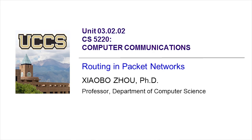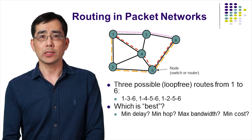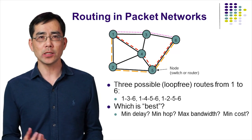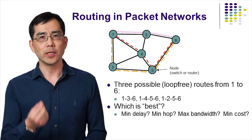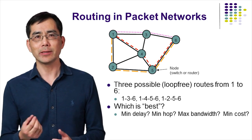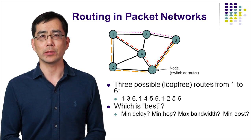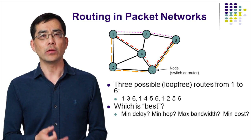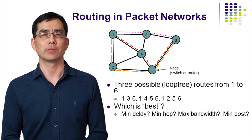In today's lesson, we will discuss routing in packet networks. The figure shows a packet switching network providing communication services among multiple nodes. For example, from node 1 to node 6, there are three possible loop-free routes: 1 to 3 to 6, 1 to 4 to 5 to 6, and 1 to 2 to 5 to 6.